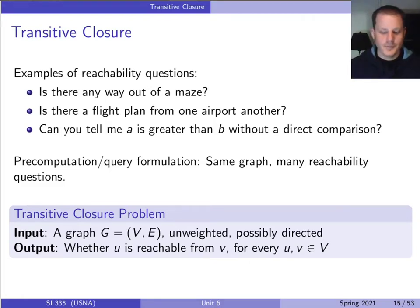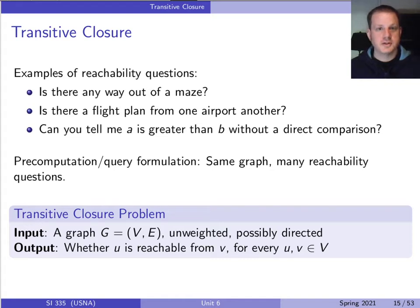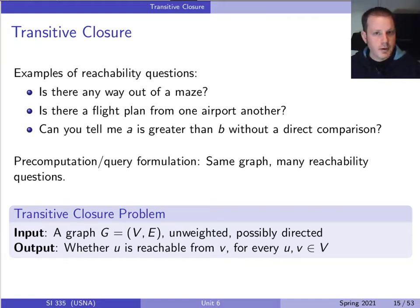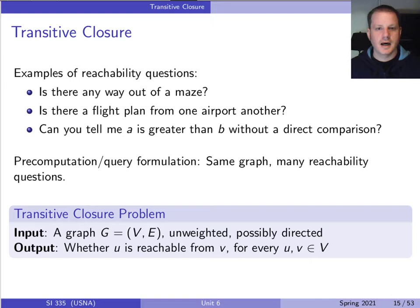Hello everybody, welcome to the next lecture video. Today we want to quickly wrap up transitive closure from Monday, then introduce a new problem on graphs called minimum spanning trees, and look at one way of solving that. This will be the first of many examples of a new way of thinking about algorithm design called greedy algorithms.